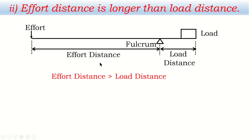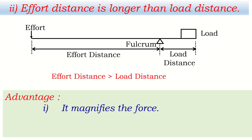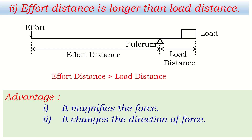In this condition, the simple machine magnifies the force — by applying less effort, we are able to raise a heavy load. For example, with 100 newton of effort we can raise 500 newton or even 1000 newton of load. Additionally, since we apply force in the downward direction, it also changes the direction of force. These two are the advantages obtainable in the second condition of the first class lever.